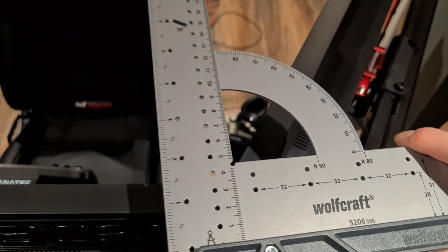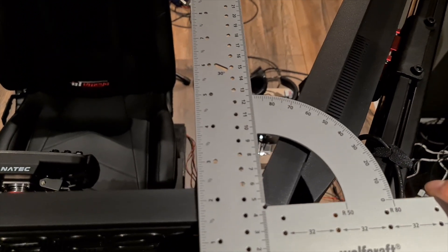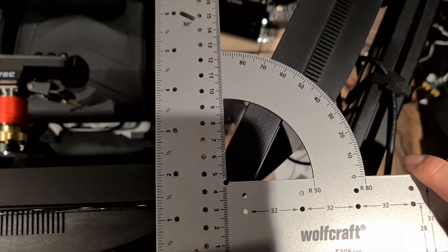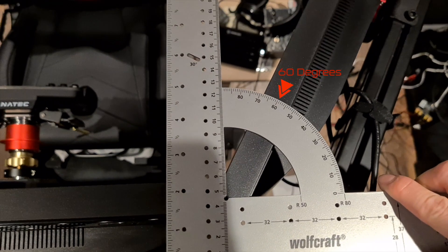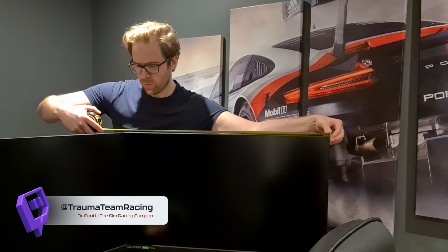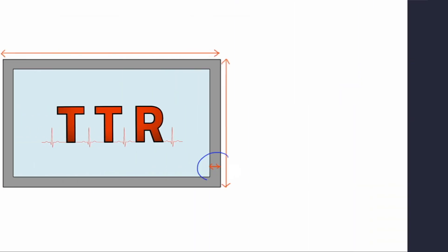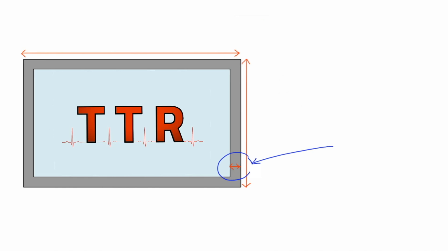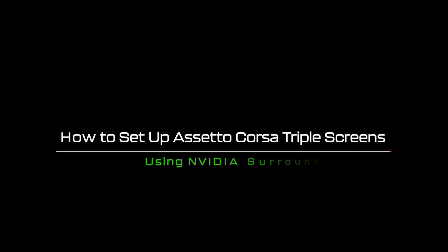To measure the angle practically you'll need a digital angle measure or a set square with an angle measure. Line it up with the middle of the monitor when viewed from the top, and repeat for the left and right monitors — be as accurate as possible. For the monitor measurements: measure the monitor's total width, then measure your bezel width, which is the distance from the outermost portion of the monitor to the start of the image. Mine measured 0.7 centimeters.